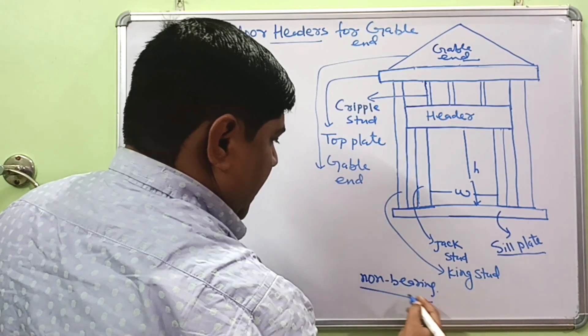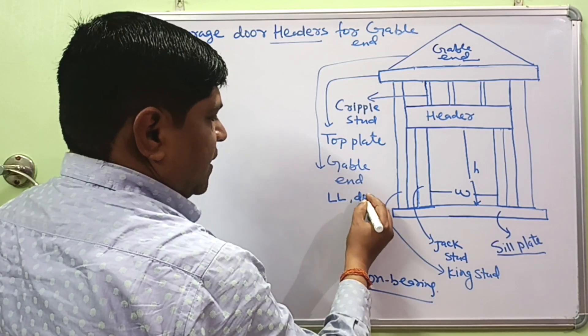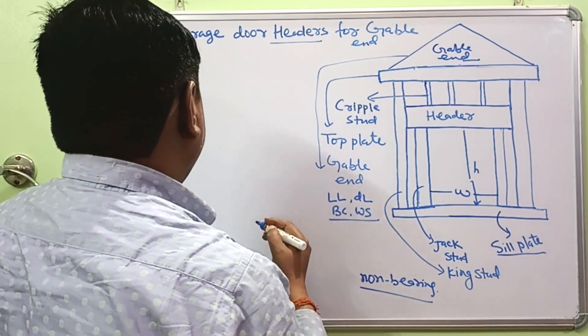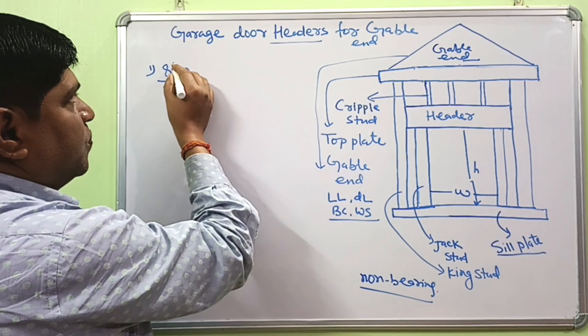you know that gable-end has non-bearing. And header size depends on live load, dead load, building code, wood species and many other factors.